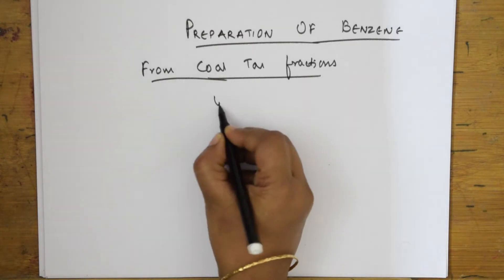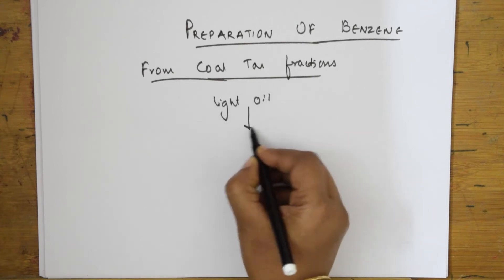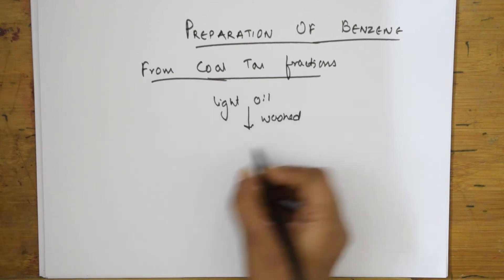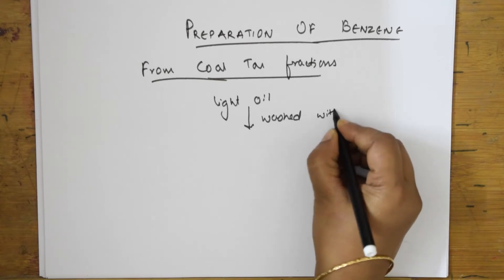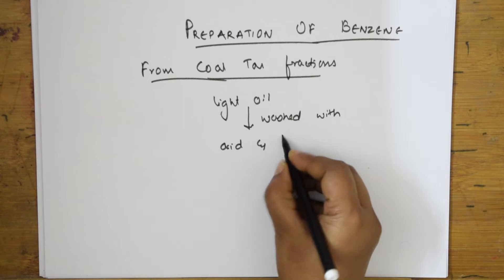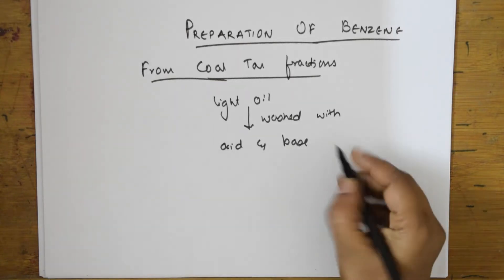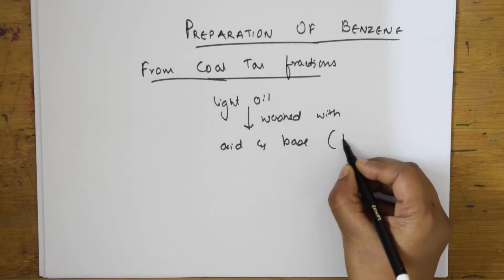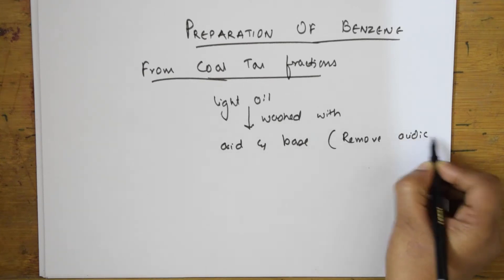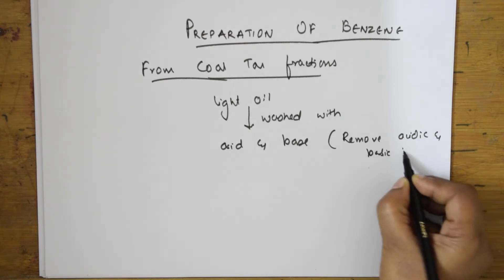What they do is take the light oil which we have obtained. This light oil is washed with acid and base. By washing with acid and base, we are going to remove acidic and basic impurities — whatever impurities are there, both acidic and basic impurities are washed off.